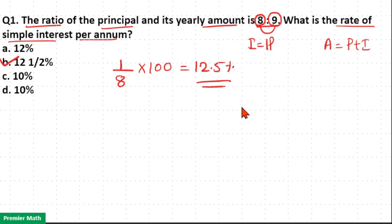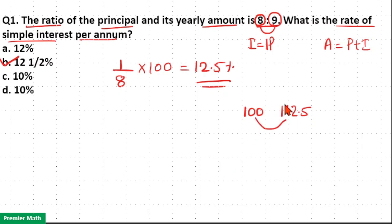For example, if I invest 100 rupees in the bank, after 1 year I got 112.5 rupees. That means the difference between the amount received after 1 year and the amount invested initially is equal to 12.5 rupees.